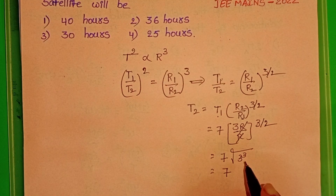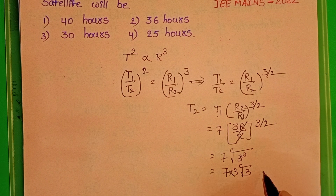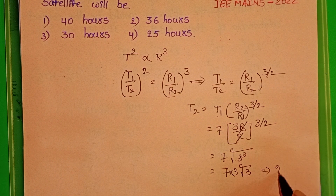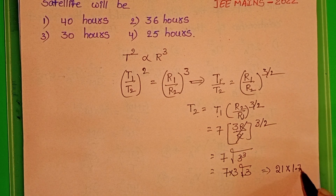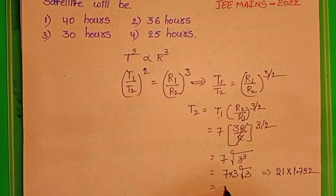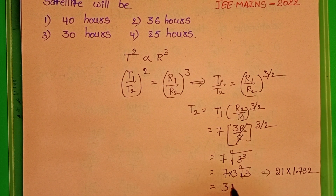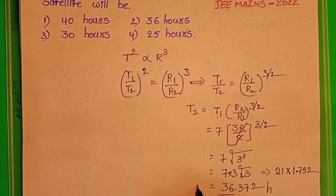T2 equals 7 into root of 27. Root 27 equals 3 root 3, so T2 equals 21 into root 3. Taking root 3 as 1.732, we get 21 × 1.732 = 36.372, which is approximately 36 hours.